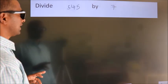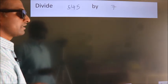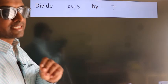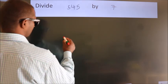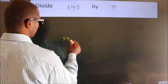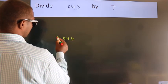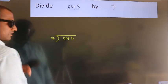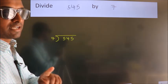Divide 545 by 7. To do this division, we should frame it in this way. 545 here, 7 here. This is your step 1.